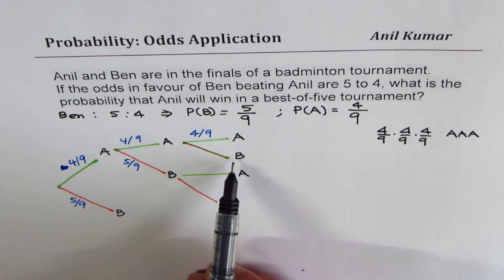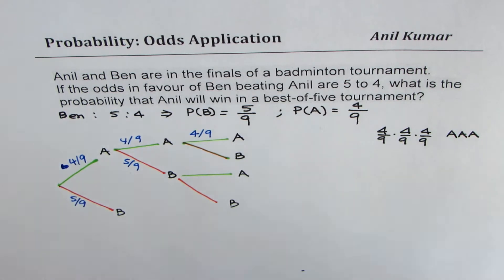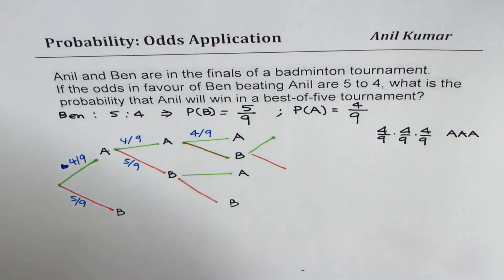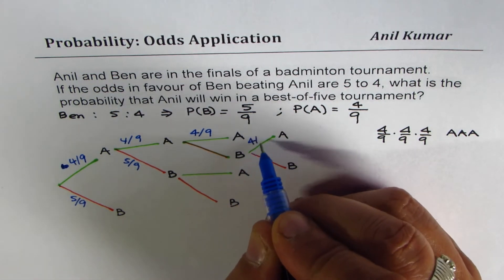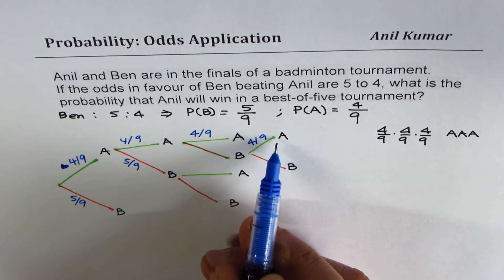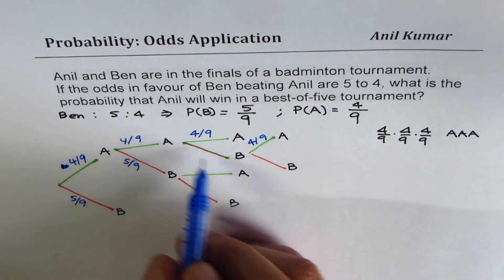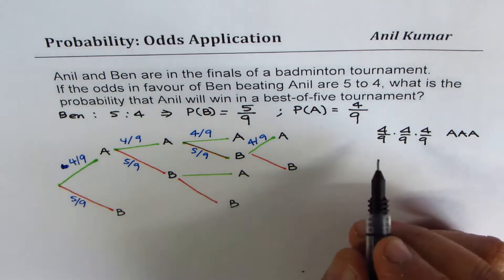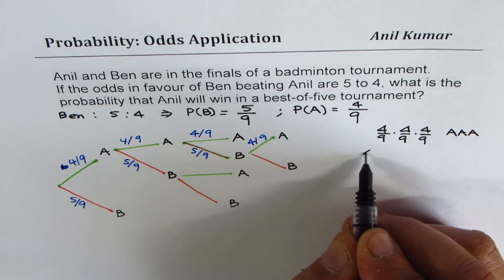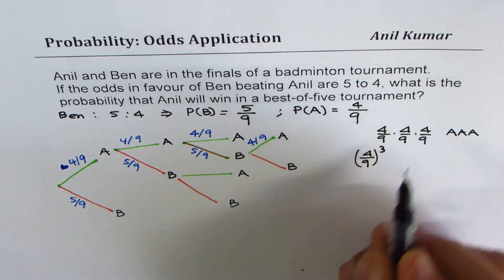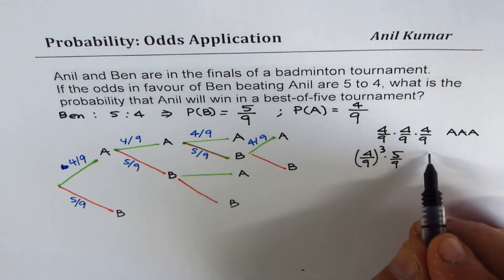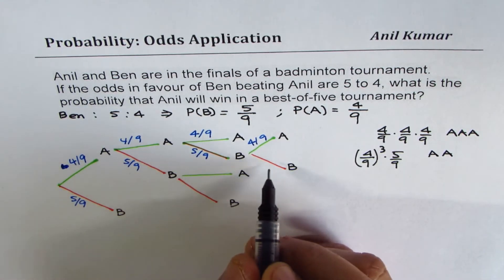Now let's look into the next path where Anil wins the first two but loses one. There is a possibility of his winning and also a possibility of losing. If he wins, that will be his third game victory, and the probability of this is 4 out of 9. So in this case, the third game is won after losing one in between. Ben winning is always 5 out of 9. Following this path, the combination is (4/9)³ times (5/9), for the sequence Anil, Anil, Ben, Anil.